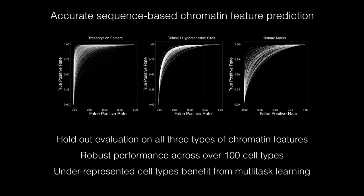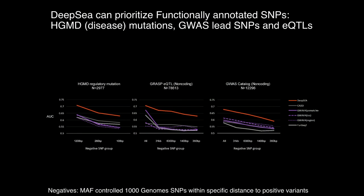This performance is robust across all cell types — each curve on the graphs represents a single cell type. Underrepresented cell types actually get a significant boost from what we call multi-task learning, where the system borrows information across cell types. Furthermore, this accurate prediction of epigenomic effects of single nucleotide changes can be used to directly prioritize disease-associated SNPs, outperforming all prior methods across HGMD disease mutations, GWAS, LD hits, and eQTL studies — all completely data-driven without biased assumptions about known transcription factor regions.